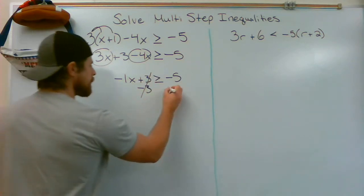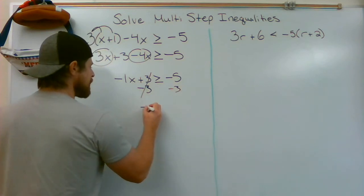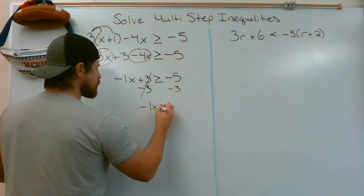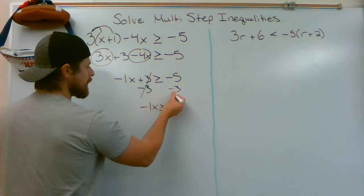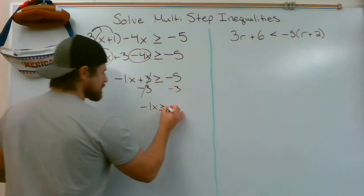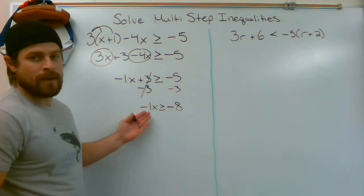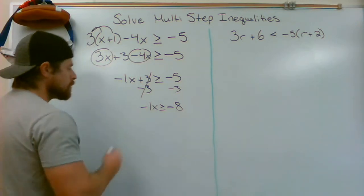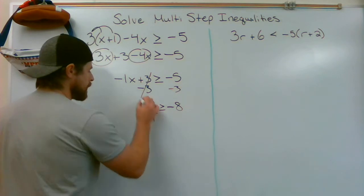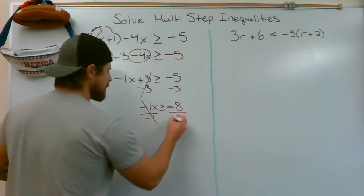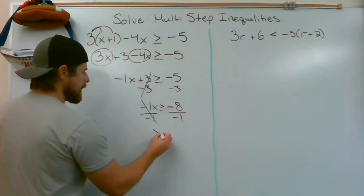Opposite of adding 3 is subtracting 3. That will cancel it out. Take 3 away from the other side. I have negative 1x is greater than or equal to negative 5 minus 3, which takes me to negative 8. My last and final step, what is the inverse of multiplying? I'm going to divide by negative 1, cancel, divide by negative 1, x.